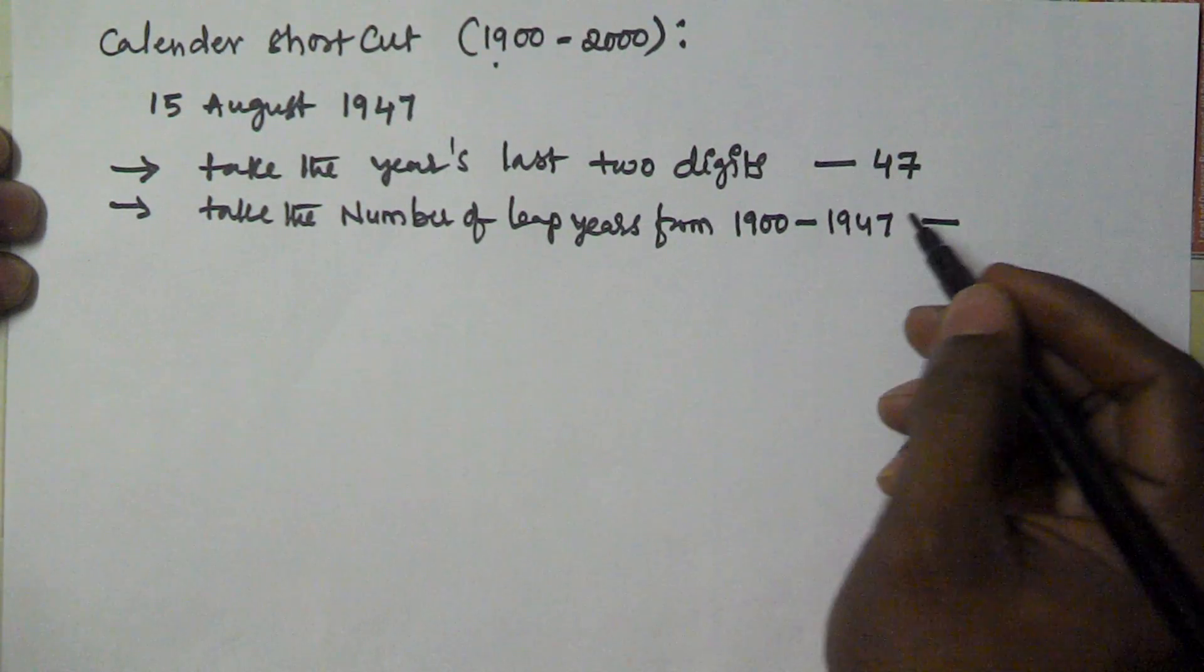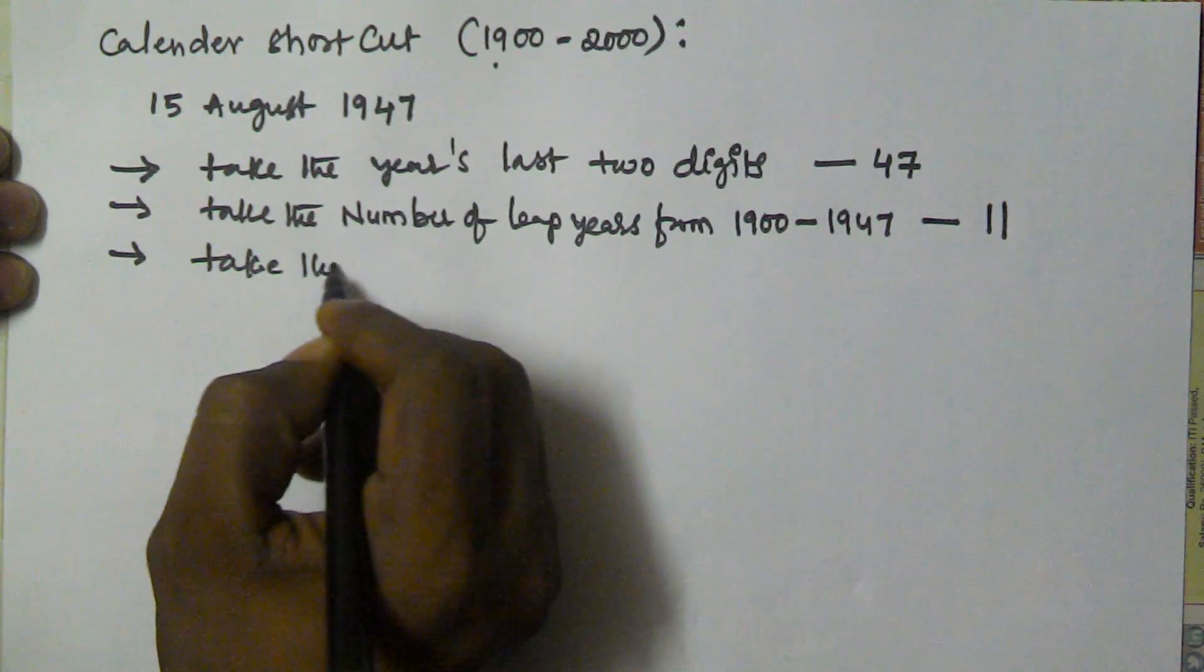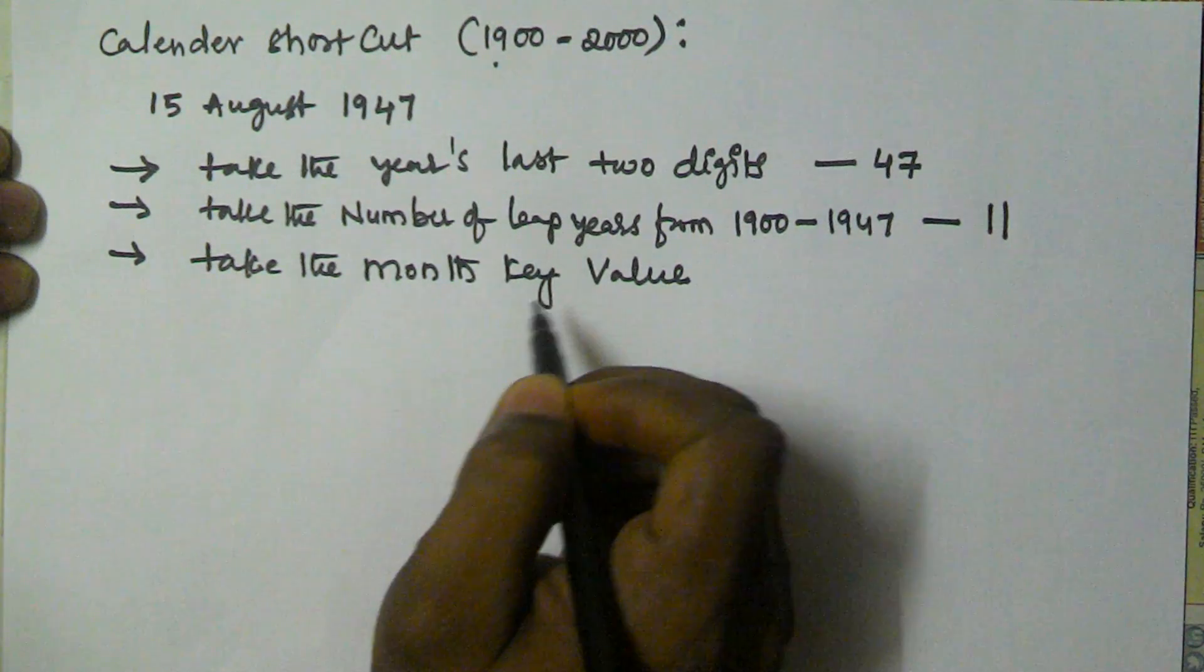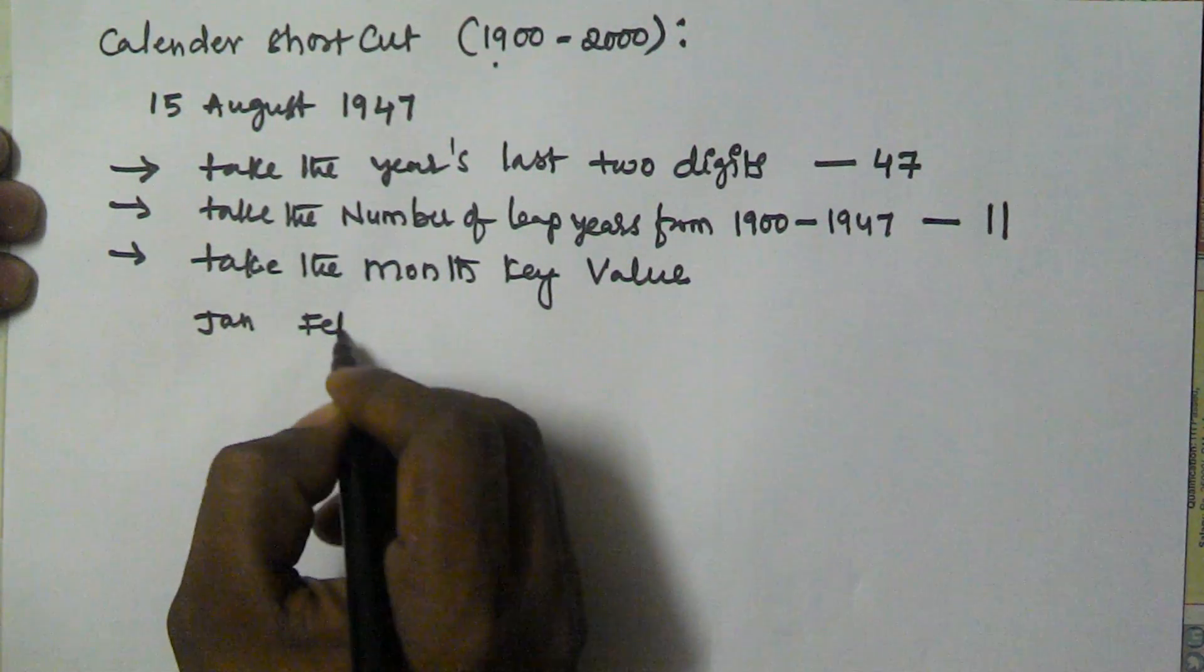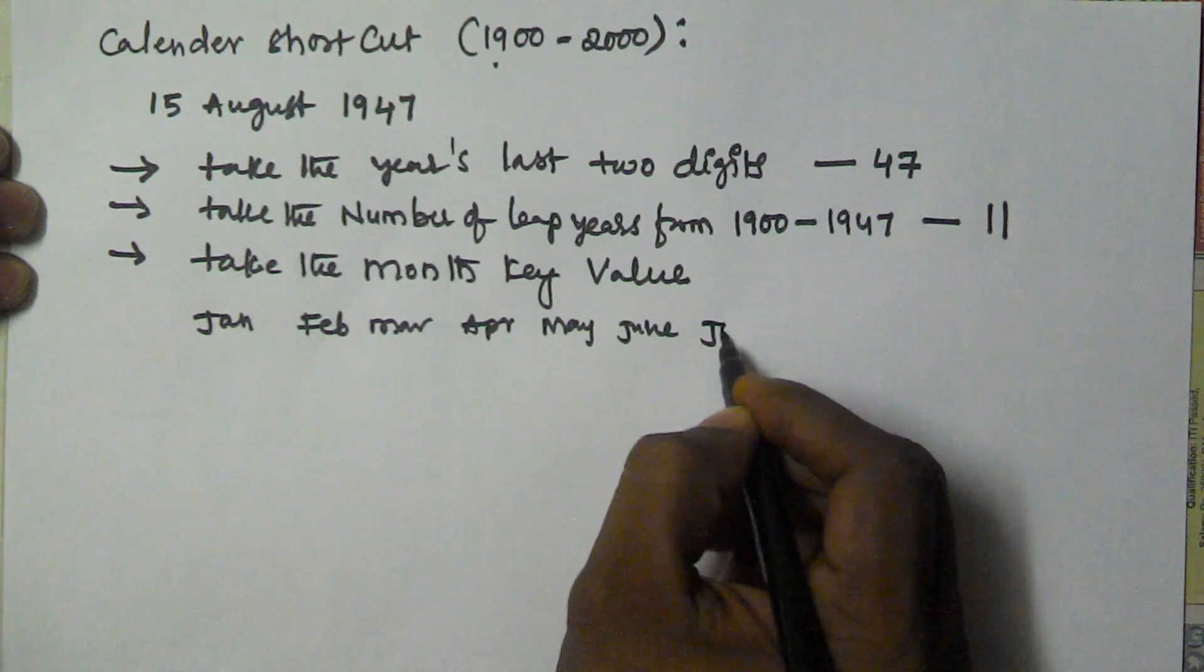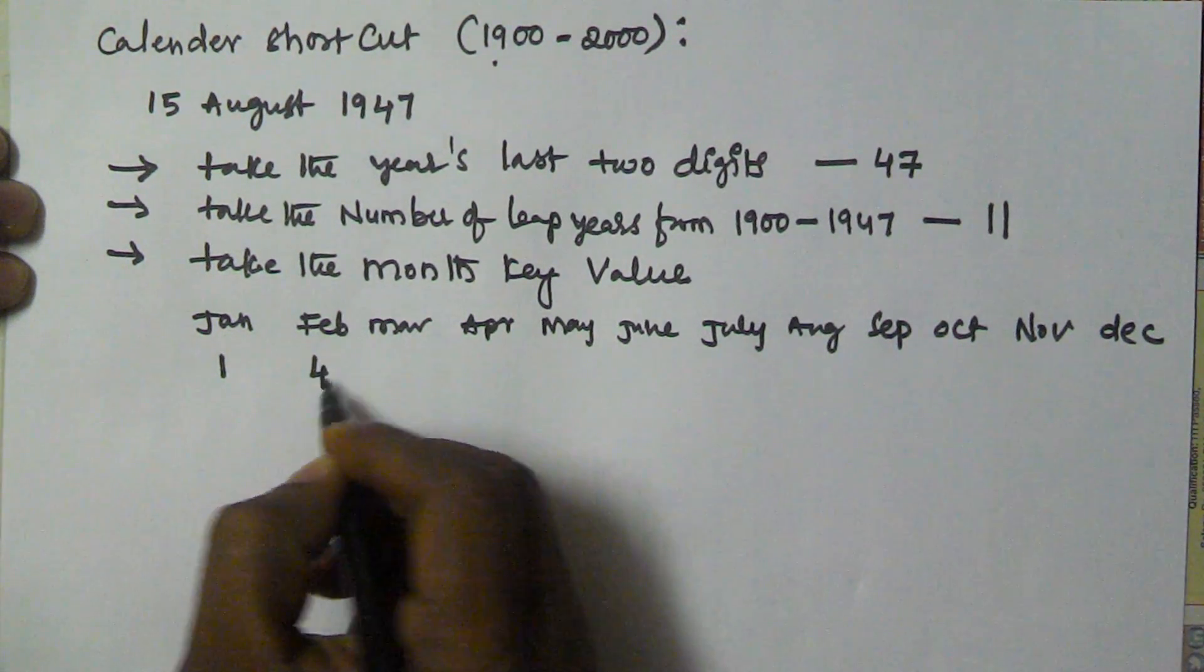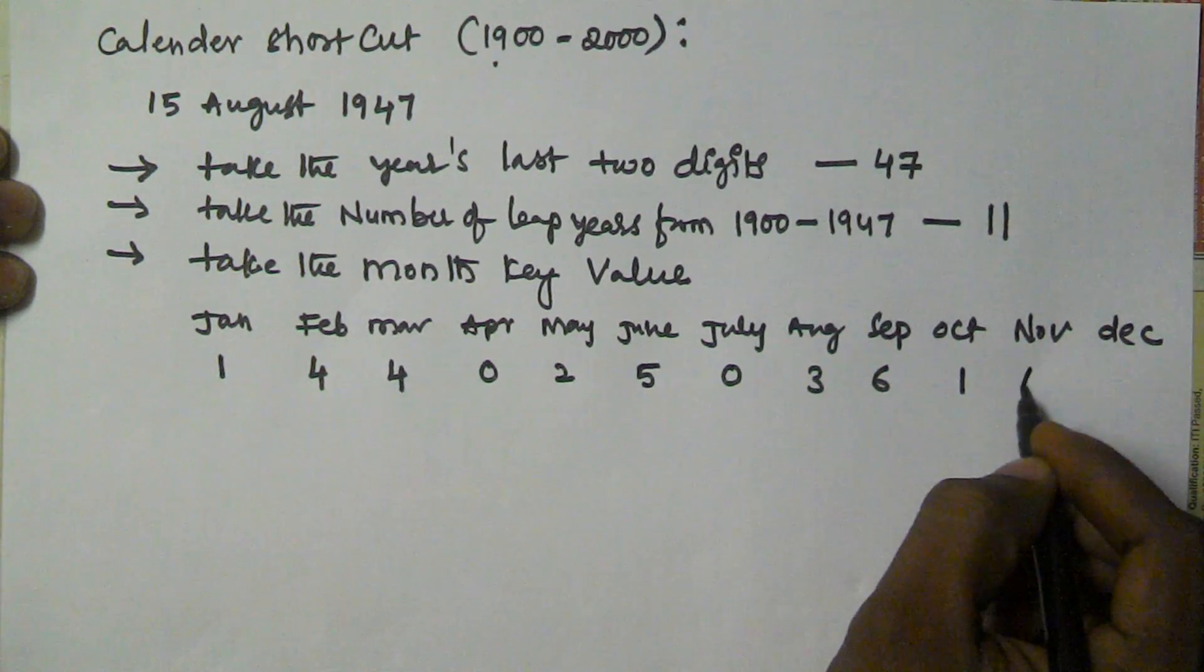Then take the month key value. In this shortcut, each month has a key value. Those key values are: January-1, February-4, March-4, April-0, May-2, June-5, July-0, August-3, September-6, October-1, November-4, December-6.